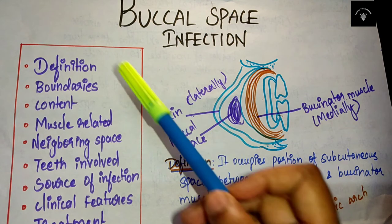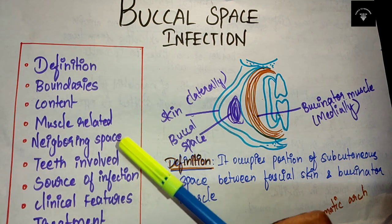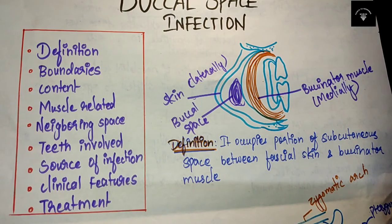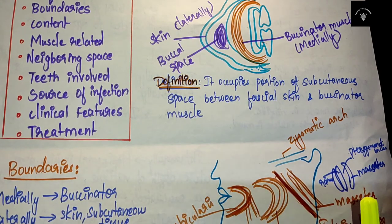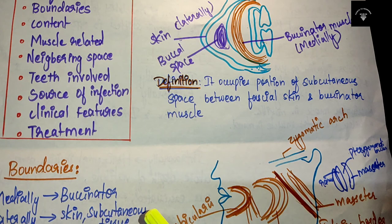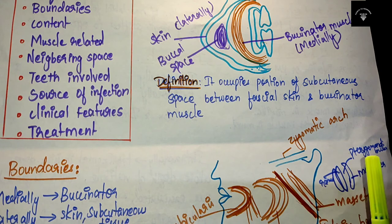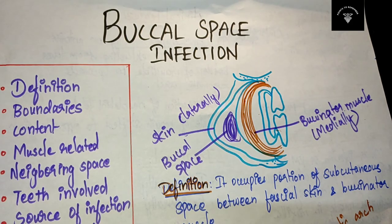To recap what we have learned: definition of buccal space, boundaries, contents, muscle related, neighboring spaces, teeth involved, source of infection, clinical features, and treatment. If you remember the two diagrams, it is very easy to write the boundaries — that is where most students find difficulty. Clinical features and treatment are straightforward. That's all about buccal space infection. Please like, share, and subscribe, and comment any queries below. Thank you for watching.